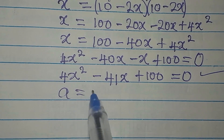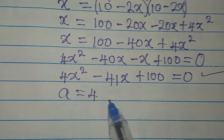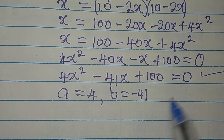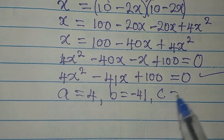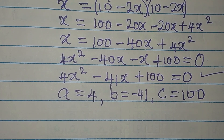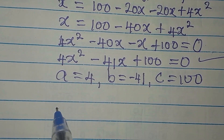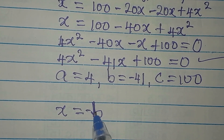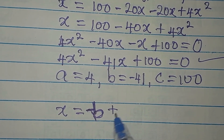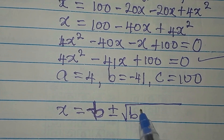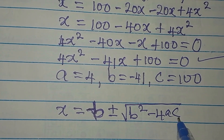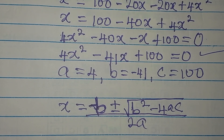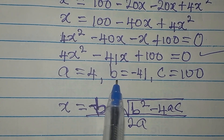We cannot factor this quadratic because 41 cannot be divided by 4 without a remainder, so let's use the quadratic formula. We identify: a is 4, the coefficient of x squared; b is minus 41, the coefficient of x; and c is 100, the constant. The formula is: x equals minus b plus or minus the square root of b squared minus 4ac, all over 2a.